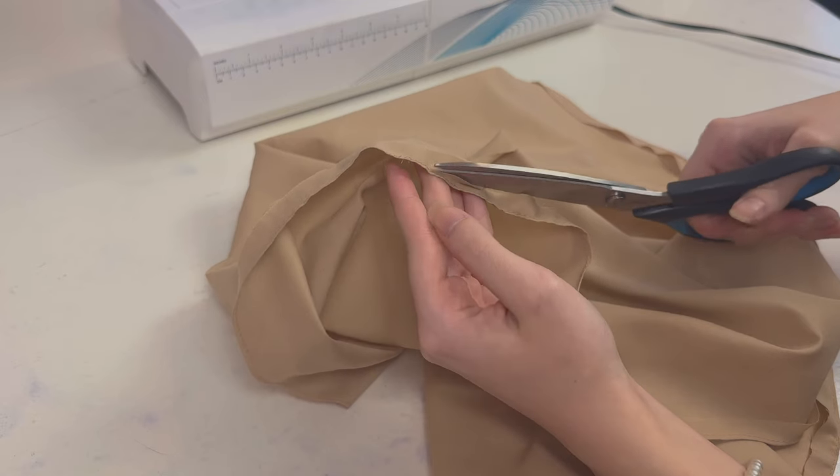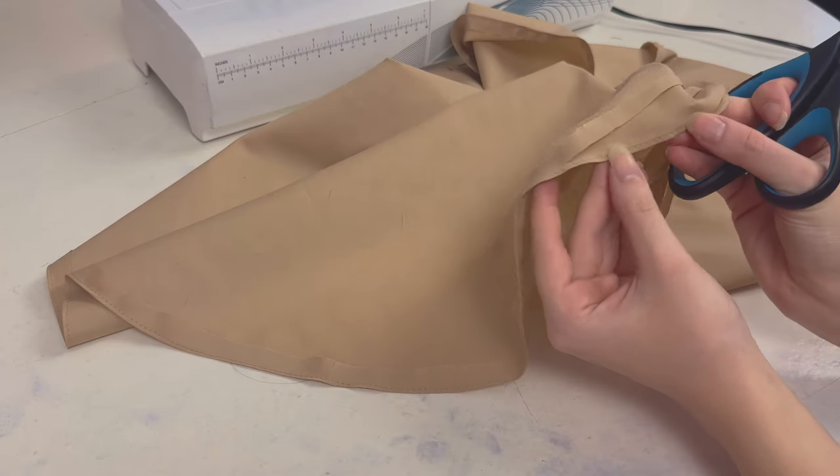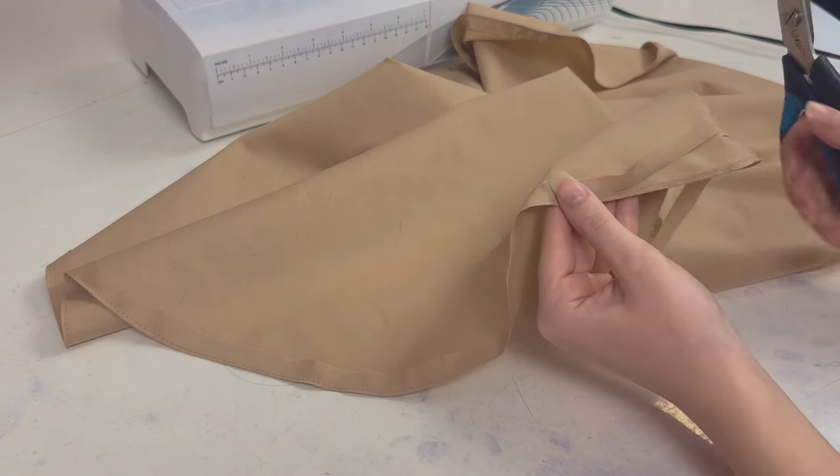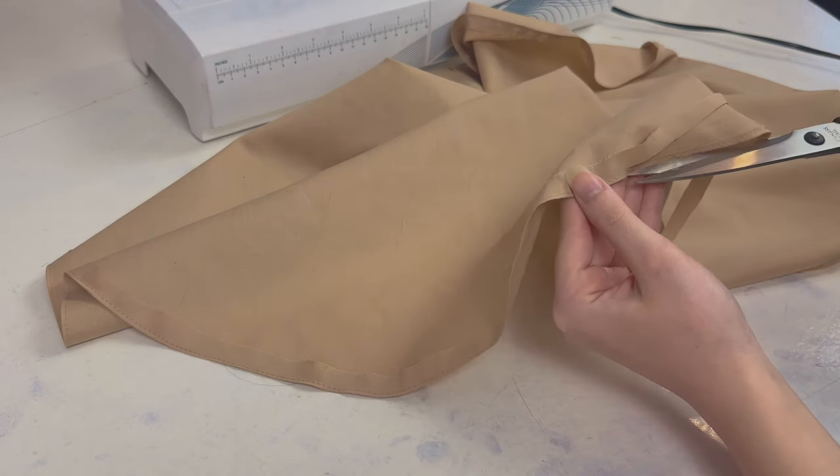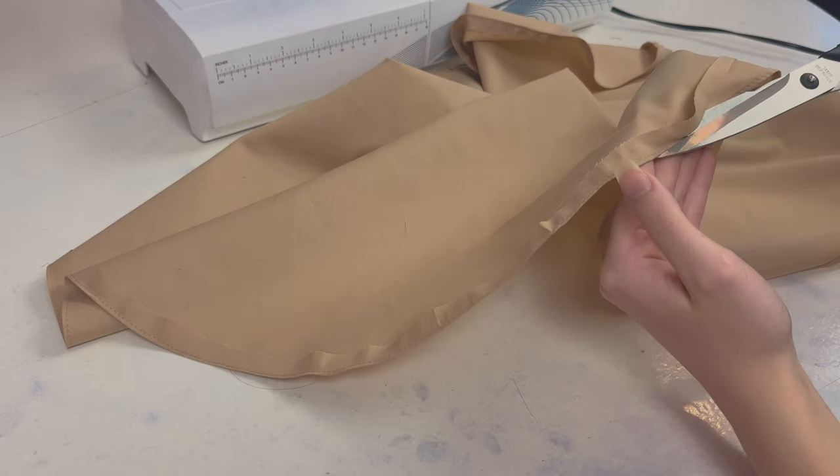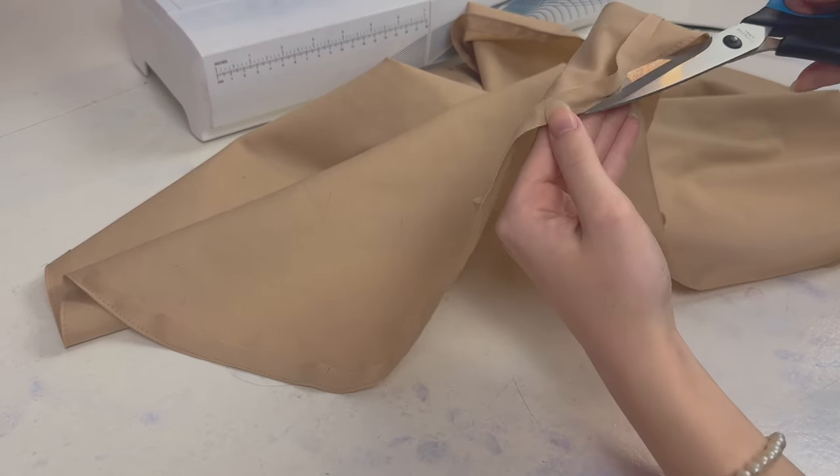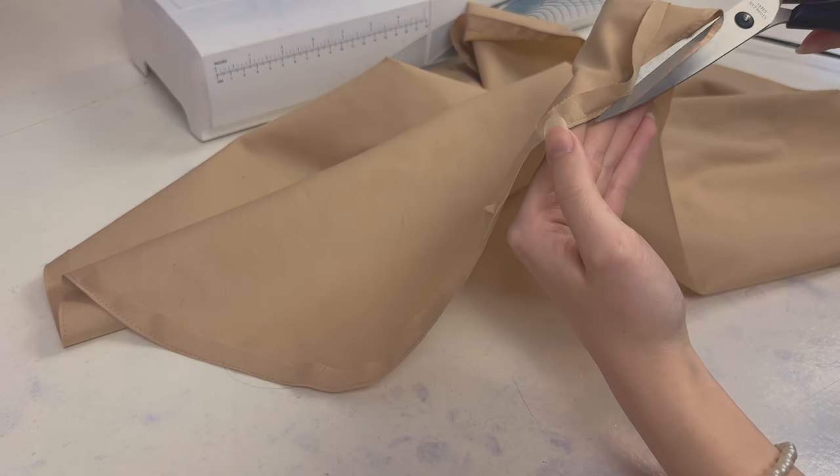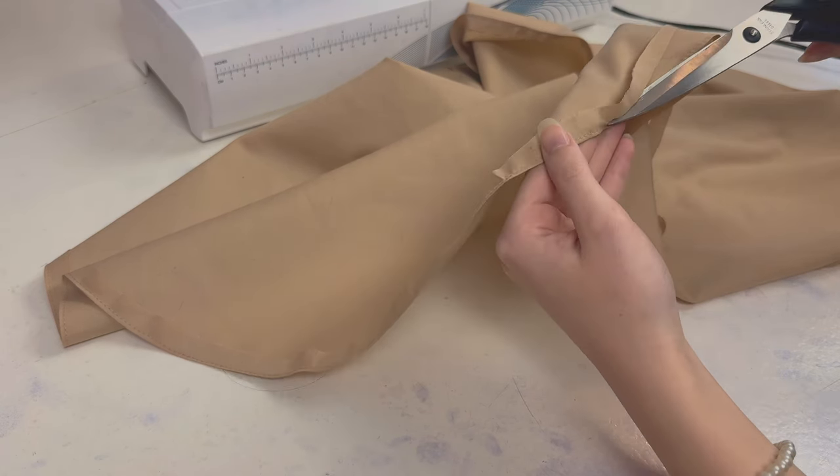So as you can see I'm going really close to that seam line but without ever touching it, that's what you want to do. And it helps to cut like this, so place your scissors where you can see kind of the shadow of the scissors, and it's super close to that line but not directly on it.